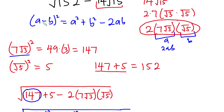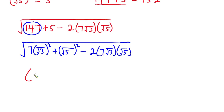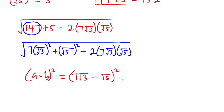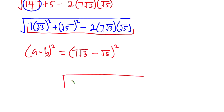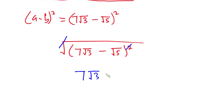We said that (a minus b) all squared equals that expression, with a equal to 7 square root of 3 and b equal to square root of 5. So this implies the whole expression equals (7 square root of 3 minus square root of 5) all squared. So we have square root of (7 square root of 3 minus square root of 5) all squared, and the square cancels the square root, giving us 7 square root of 3 minus square root of 5. And that is our final answer.